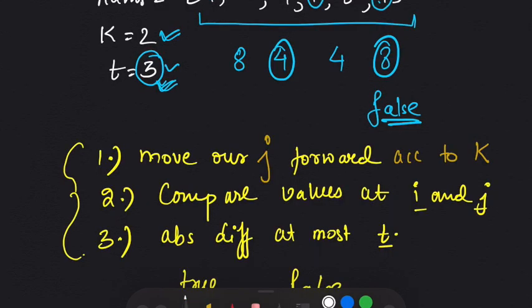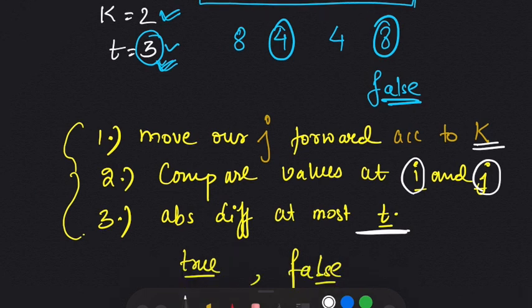From these examples we learned three things: we need to move j forward according to k, compare the values at index i and index j, and find the absolute difference between those values — it should be at most t. If both conditions are satisfied we return true, else we return false.